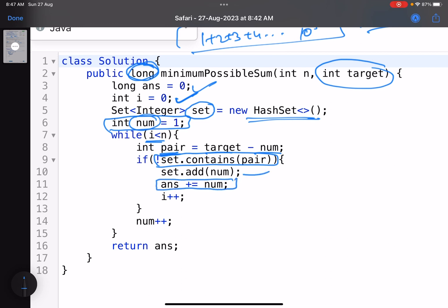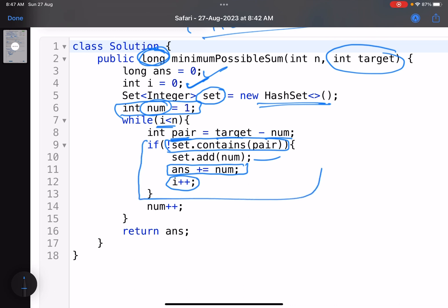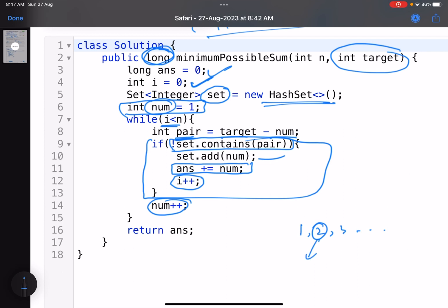Now even if this condition is true or not, every time you will increment your number. Why? Because first you try with one, two, three, and so on. When you try with a number, there are two possibilities: either you insert it if its pair is not present, or you skip it. That's why I've taken this condition outside. You increment the number every time. Finally, when you have inserted n numbers, you just return your answer.